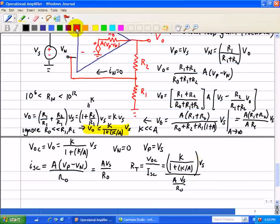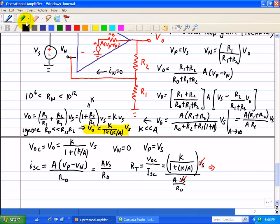So we see that VS cancels out. And we're left with RT is equal to K over A divided by 1 plus K over A times RO.